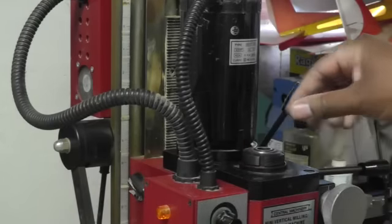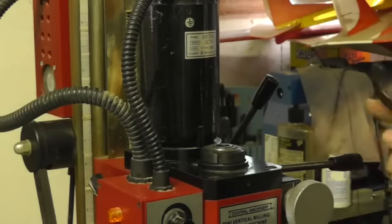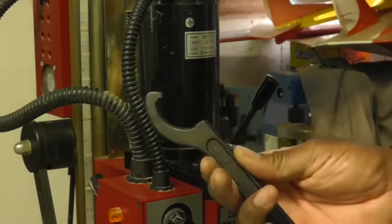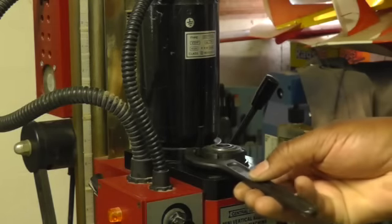That locks the spindle in place. With the spindle lock rod in place, I'm going to take that special spanner wrench and I'm going to apply it to the nut to loosen it.